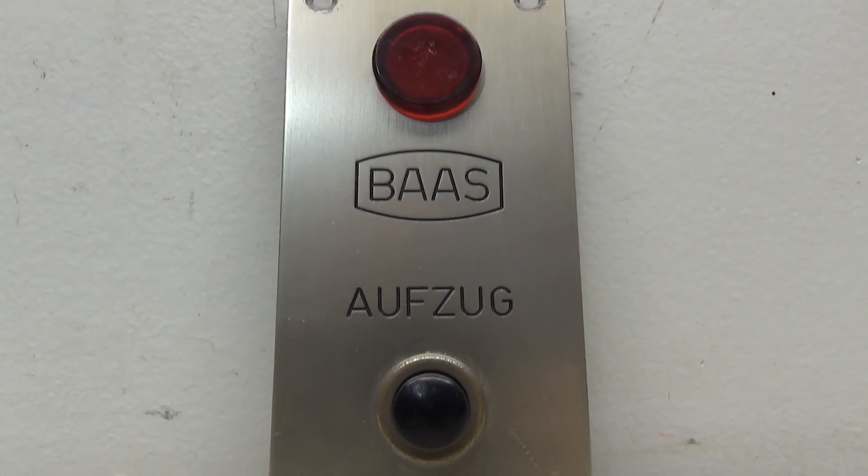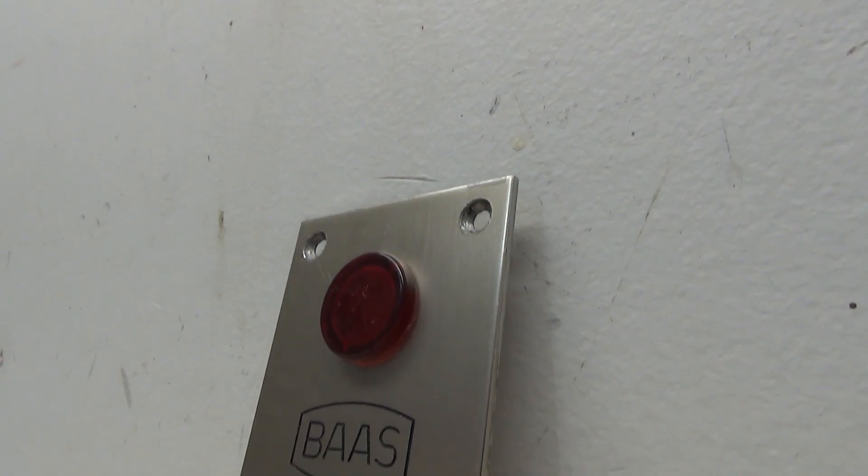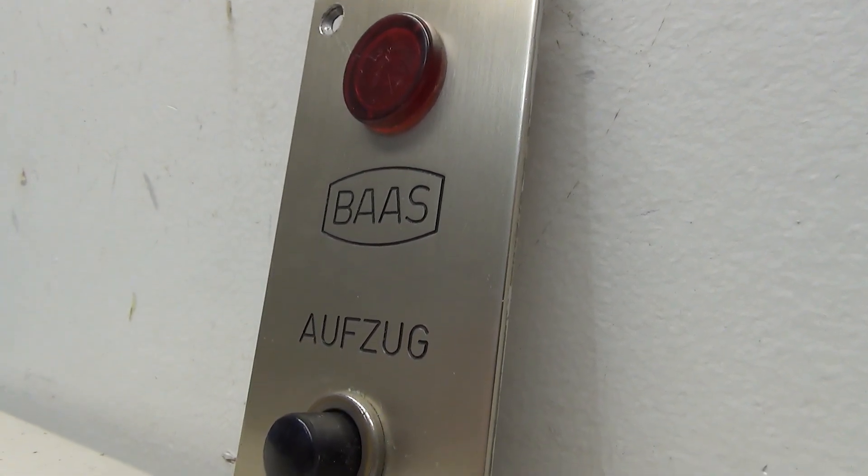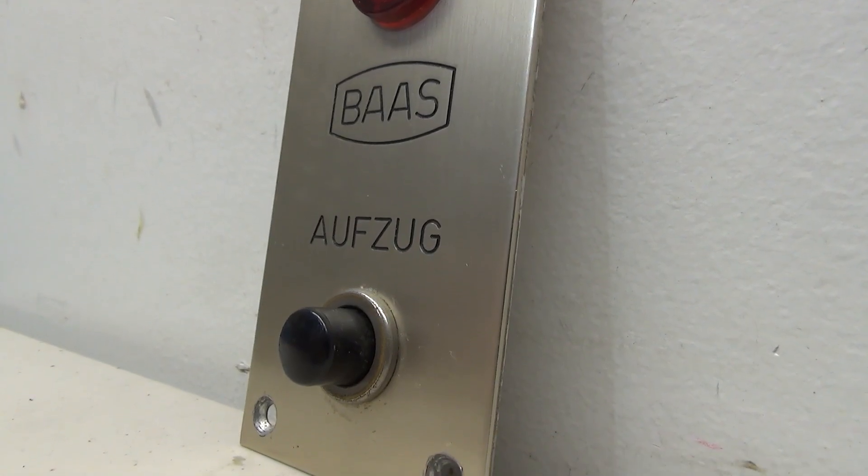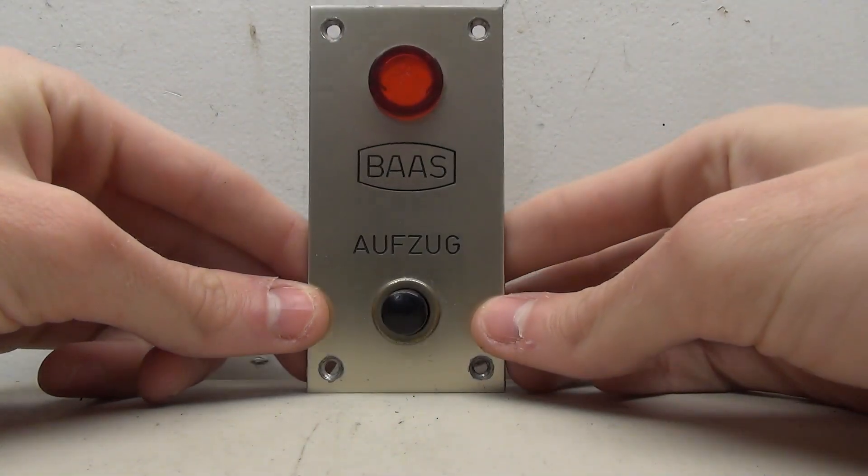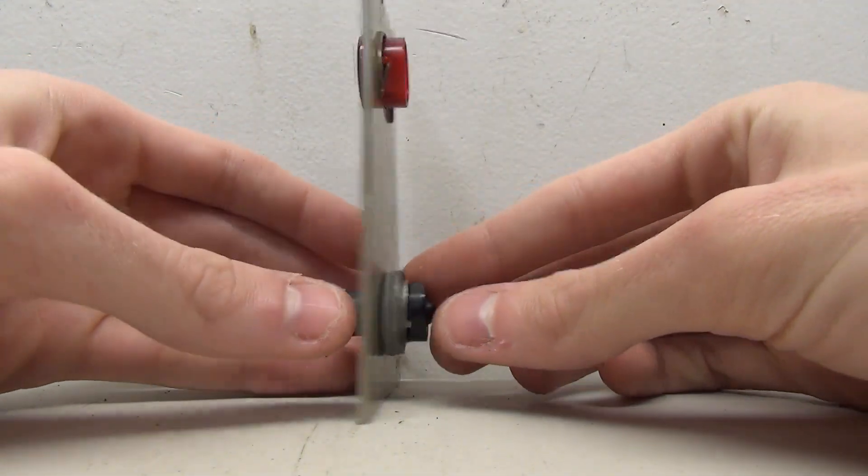In this elevator part project, I'm going to be working on this rather interesting call station. This is a very small call button that came from Germany, and unfortunately I only have the plate for this fixture. I do have the button cap, which is nice, but the goal of this project is to turn this into a fully working call station.